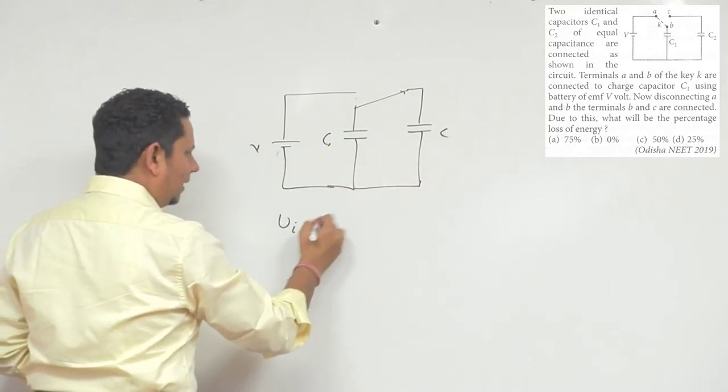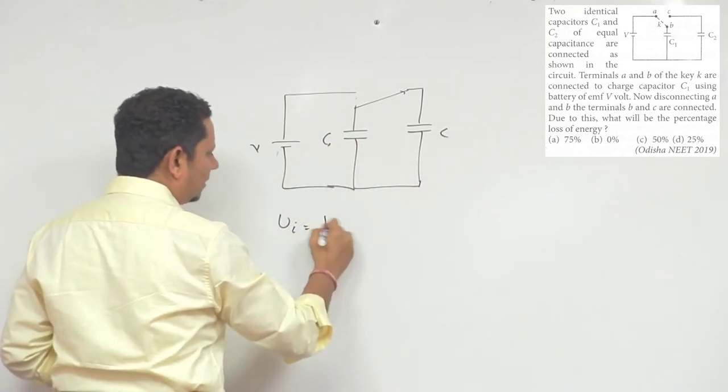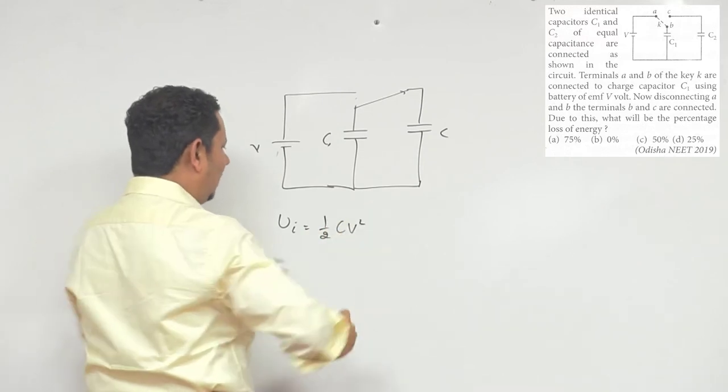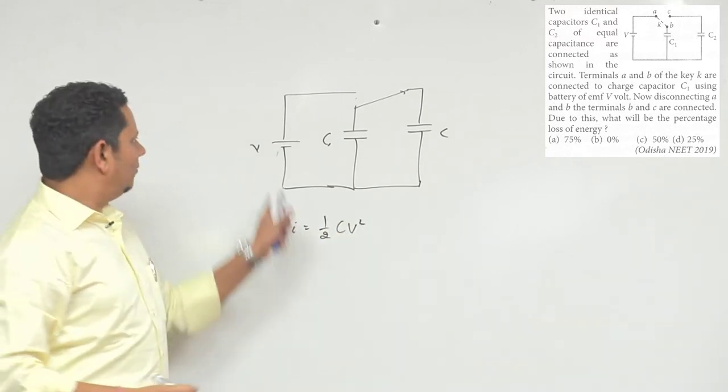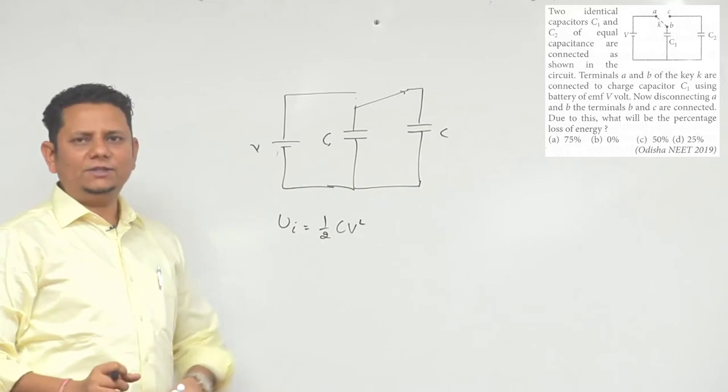If we talk about initial energy, when the capacitor is full charge, it will be half CV square. Because if we charge the capacitor, it will be half CV square.